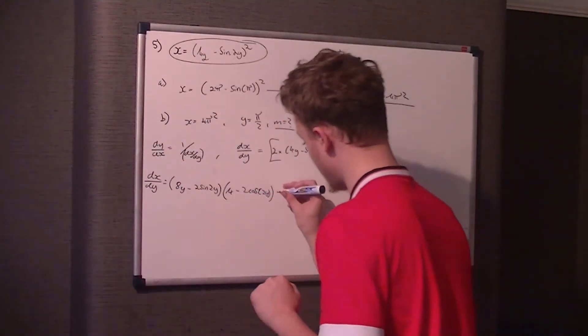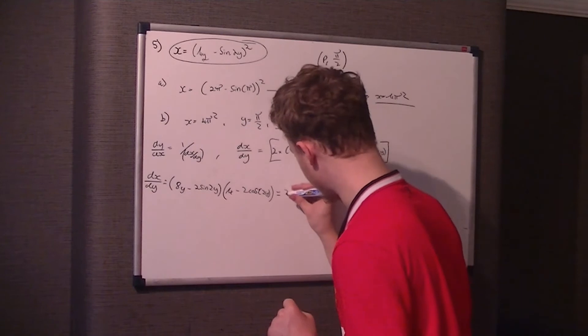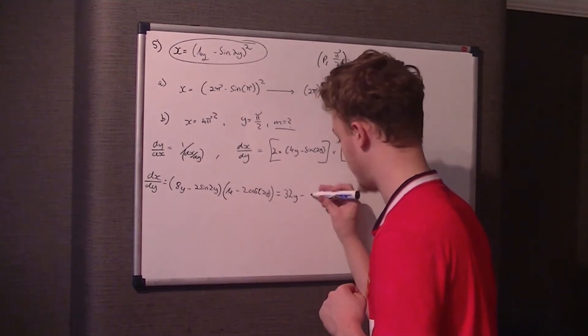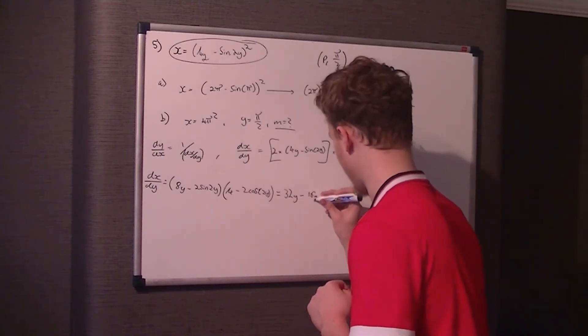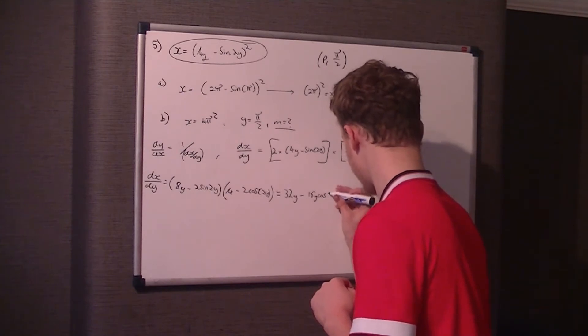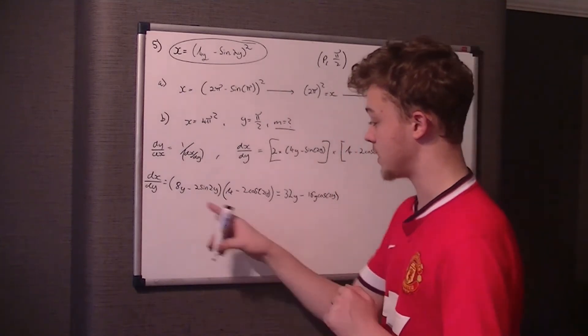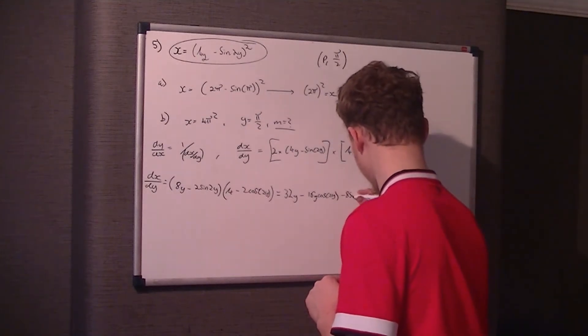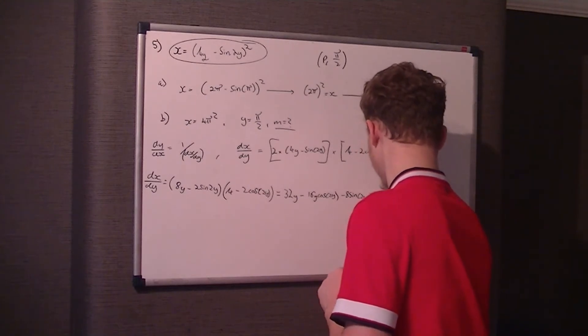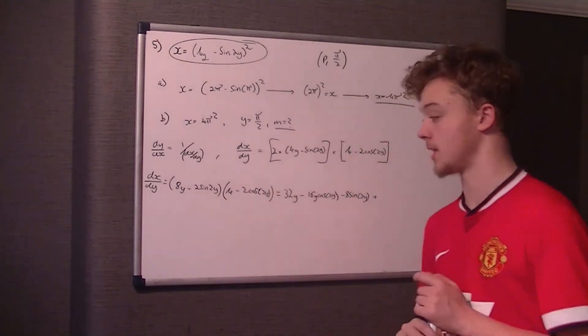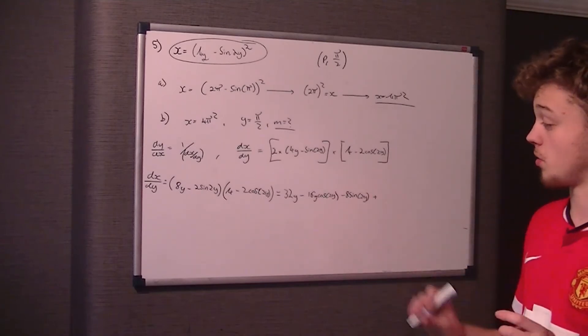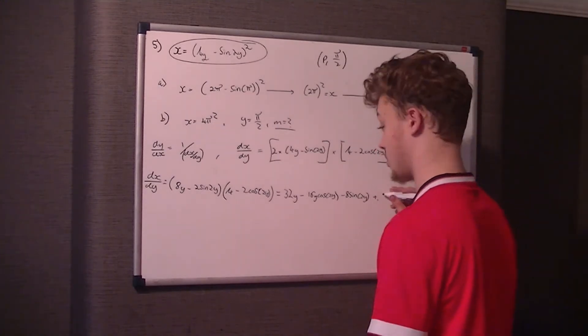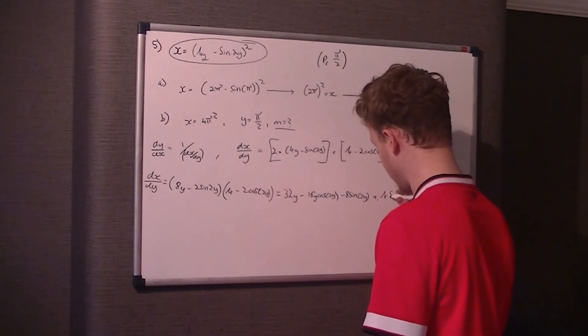So therefore, this first expansion is 8y take 2 sine 2y. And I'm going to times all of that by 4 take 2 cos 2y. So now it's just a case of expanding it. So 8y times 4, that's 32y. 8y times negative 2 cos 2y, which is negative 16y cos 2y. And that's negative 2 sine 2y times 4, so that's negative 8 sine 2y. Plus, because it's negative 2 sine 2y times negative 2 cos 2y, I'm just going to write it as 4 sine 2y cos 2y.